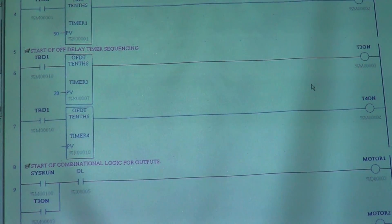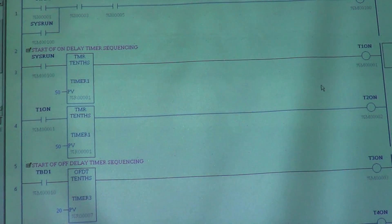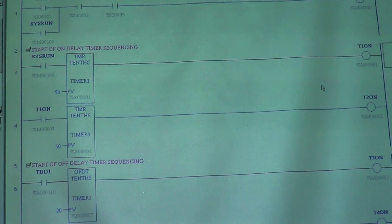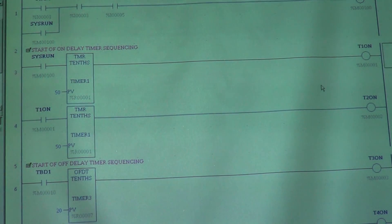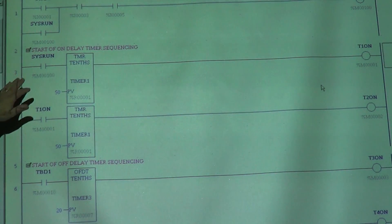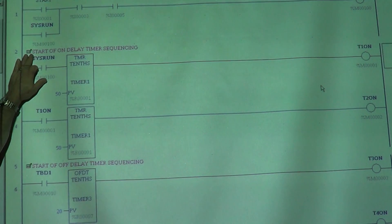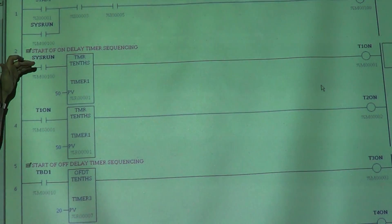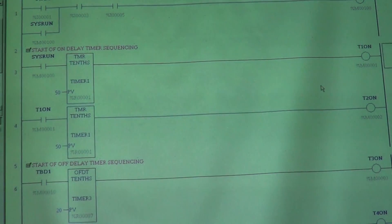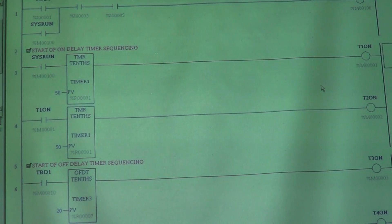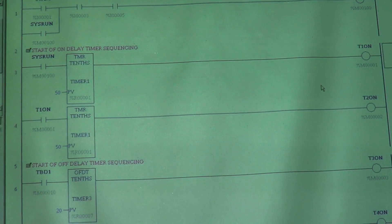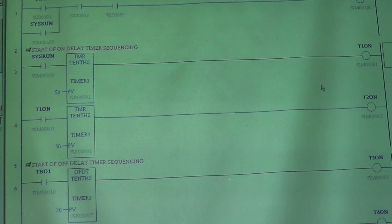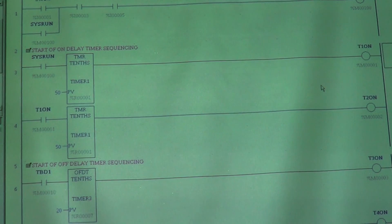You see here, I'll start off with my start stop. It says run - my first coil up there at the top. Inserted a comment here: start of on-delay timer sequencing. Then I have my timers. I've only shown two timers up there. Got my memory coils over there: T1 on, T2 on, T3 on, T4 on.